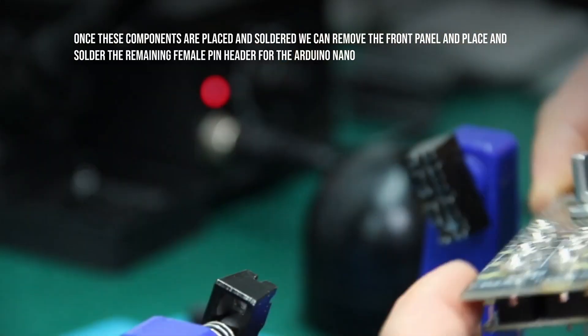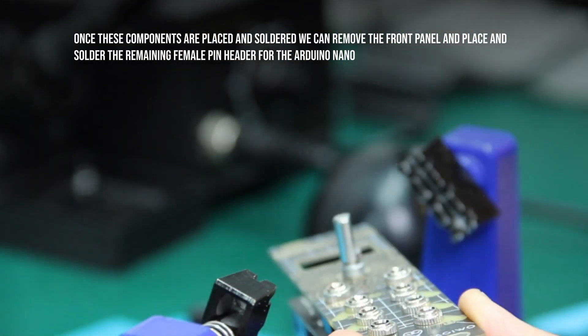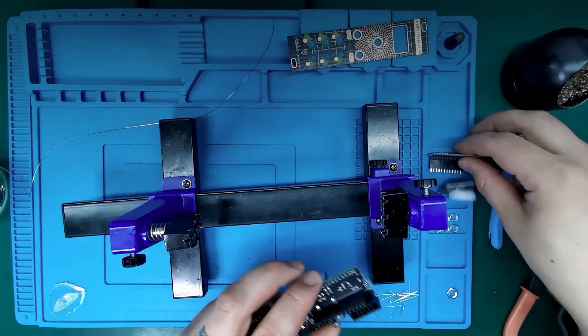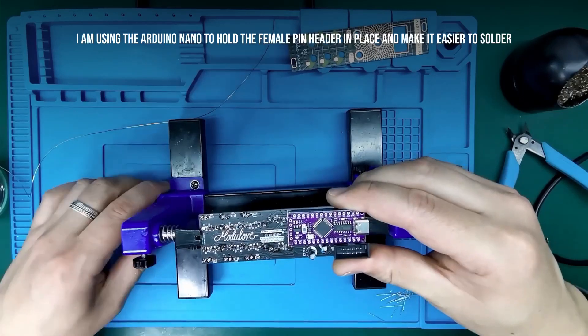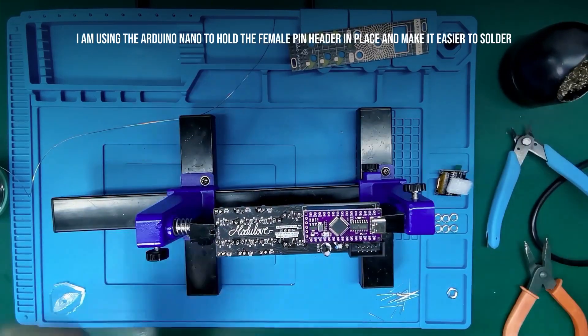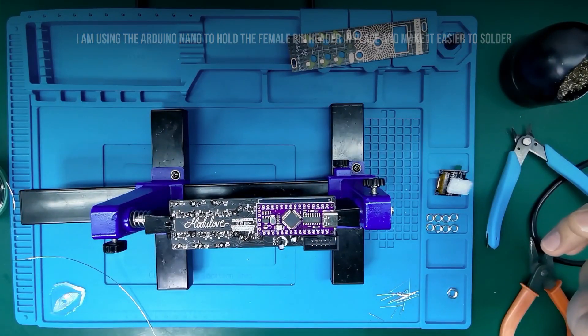Once these components are placed and soldered, we can remove the front panel and place and solder the remaining female pin header for the Arduino Nano. I am using the Arduino Nano to hold the female pin header in place and make it easier to solder.